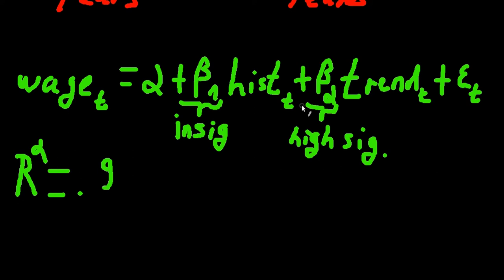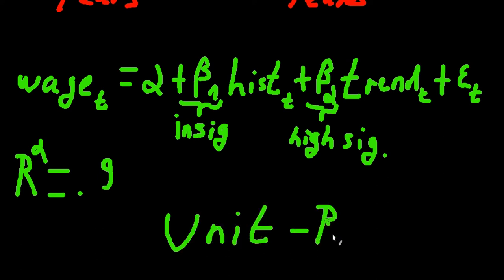Sadly, it could happen — and it's very likely that it does happen — that either one or both time series contains what we call a unit root. If this is the case, even using detrended variables will result in spurious regression. So what is a unit root?